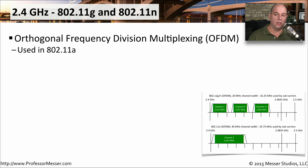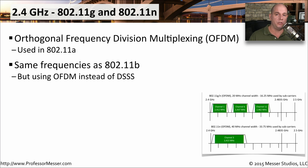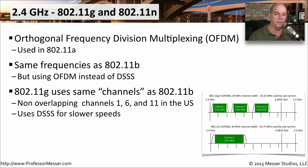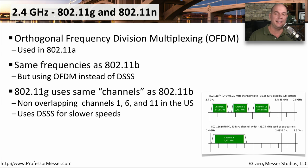The 2.4 GHz range is also used by 802.11g and 802.11n. It uses a different modulation type to send the information, though — orthogonal frequency division multiplexing, or OFDM. This is the same modulation type used for 802.11a, and it's using the same frequencies as 802.11b, just with OFDM instead of DSSS. The overlap of channels is exactly the same for 802.11g and 802.11n: channels 1, 6, and 11. If it needs to use slower speeds, it effectively reverts back to the 802.11b mechanism, so you may also see DSSS modulation at those slower speeds.